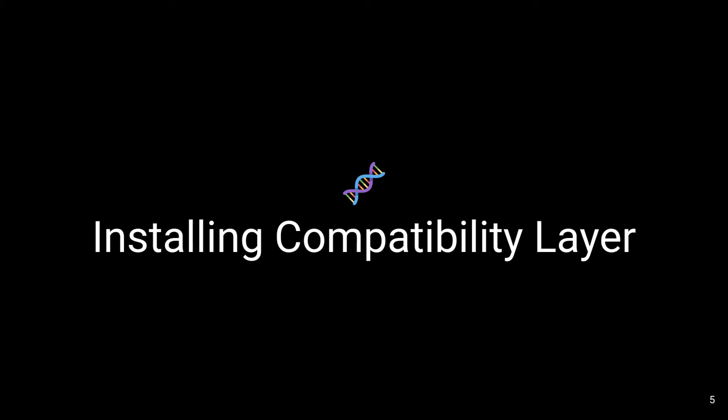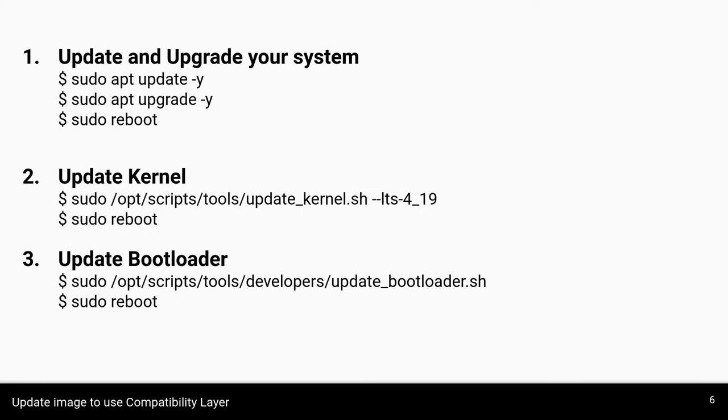Hopefully, by the time you are watching this video, you will be able to use the compatibility layer out of the box, or by simply flashing a new BeagleBone.org firmware image on your system. Let's see how you can manually install it on your system.